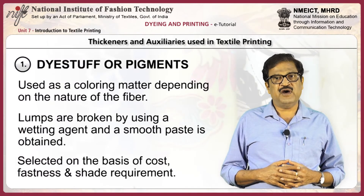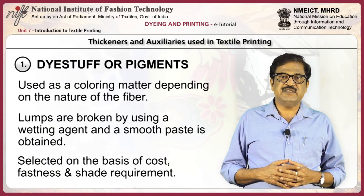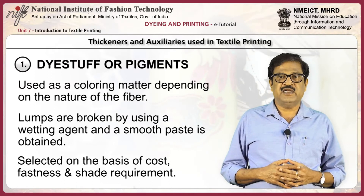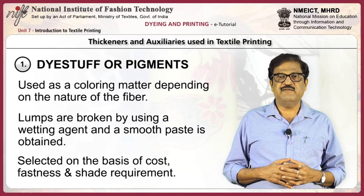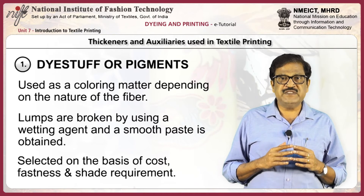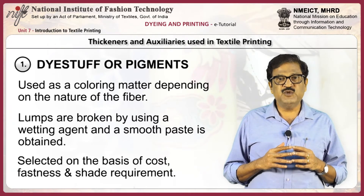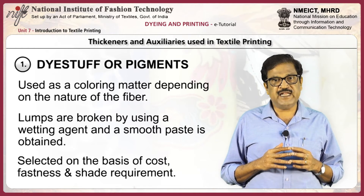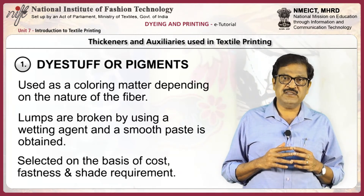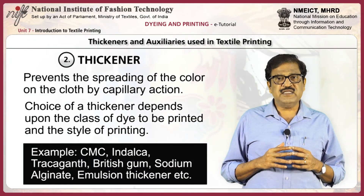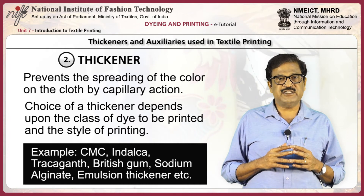Dye stop or pigment is used as coloring matter depending on the nature of the fiber. Lumps are broken using a wetting agent and a smooth paste is obtained. Dye stop or pigment is selected on the basis of cost, fastness properties, and requirement of shade.